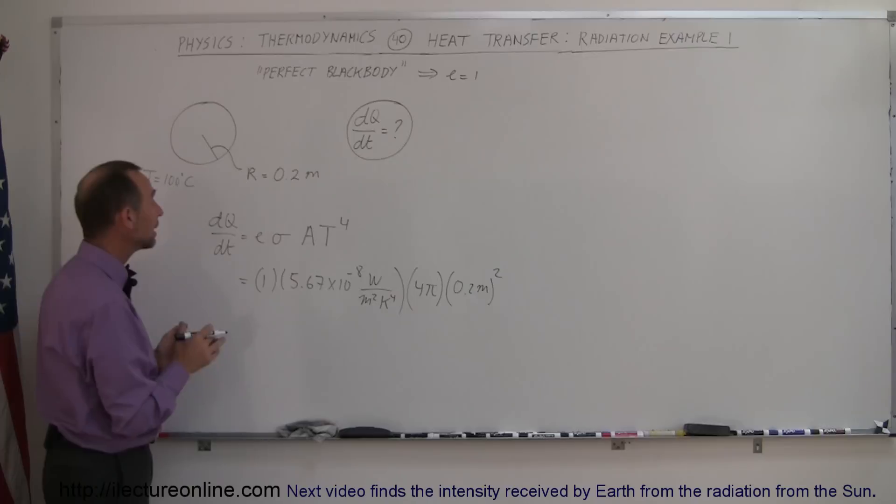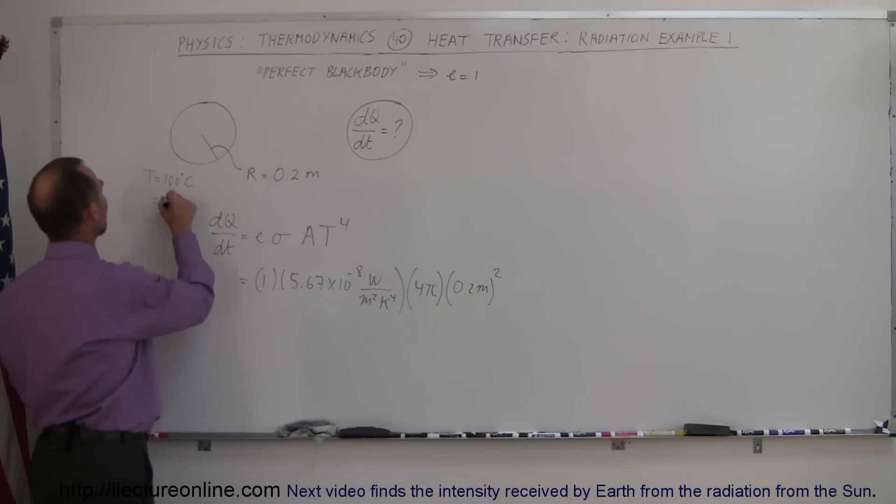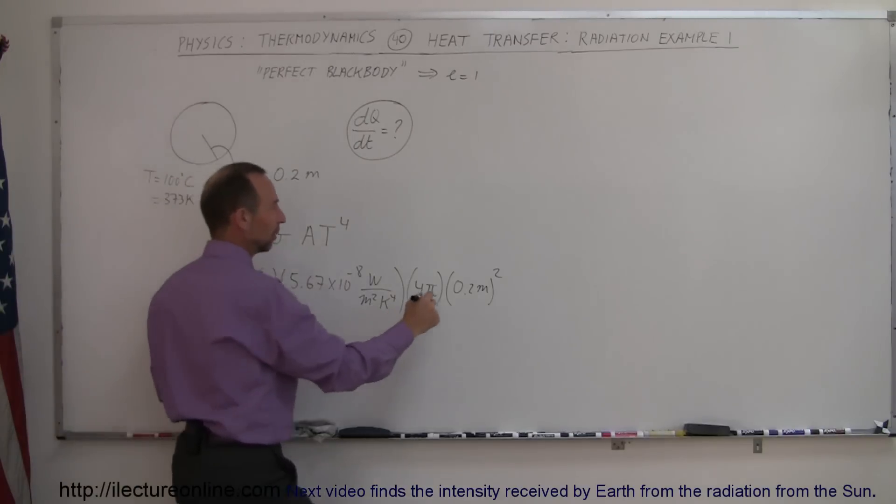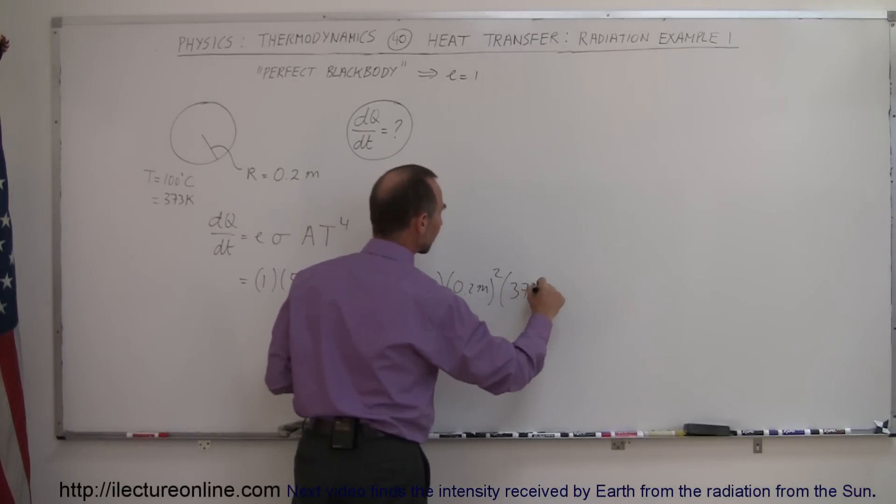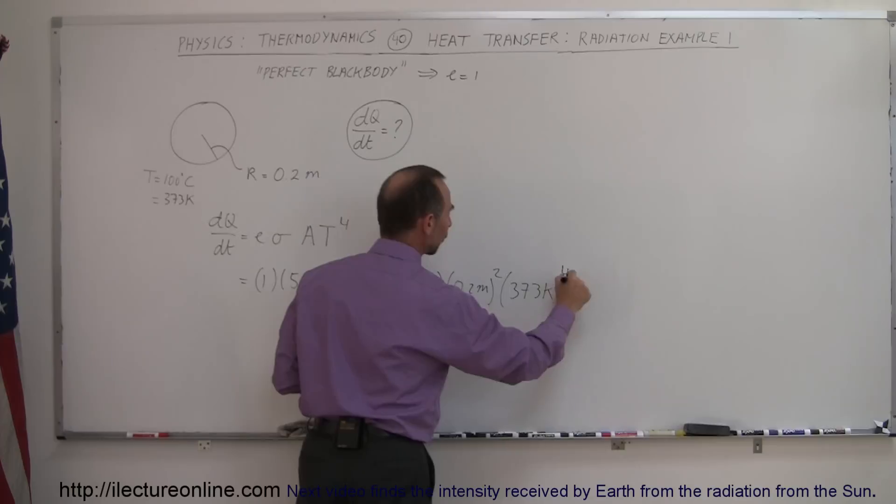Now we have to indicate the temperature in Kelvin, of course. 100 degrees centigrade is the same as 373 Kelvin, which has to go in here. So that's equal to 373 Kelvin to the fourth power.